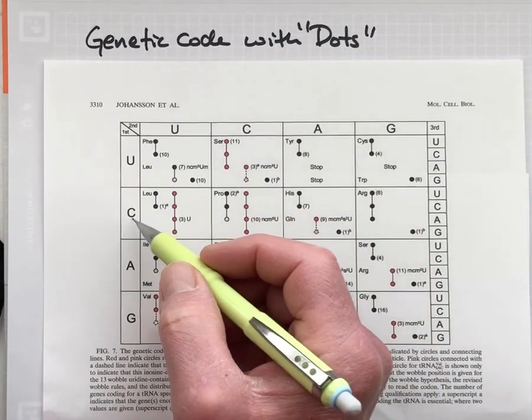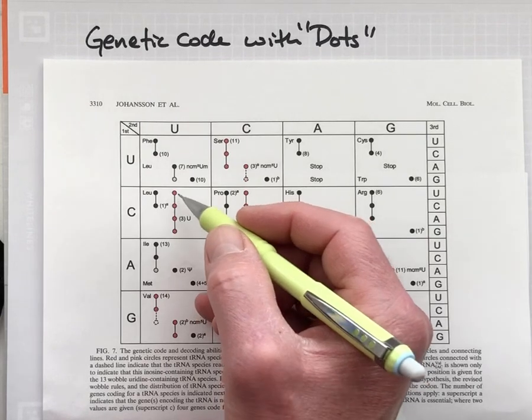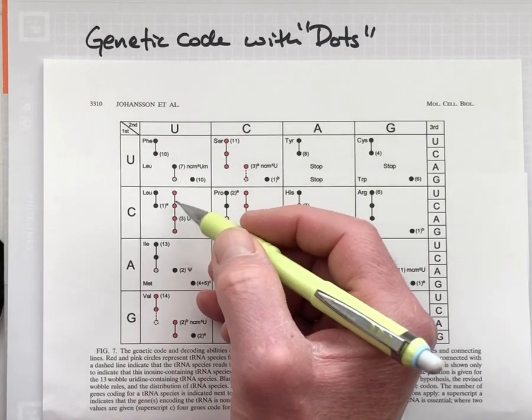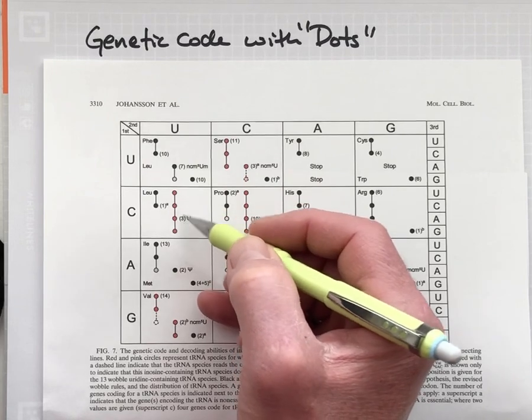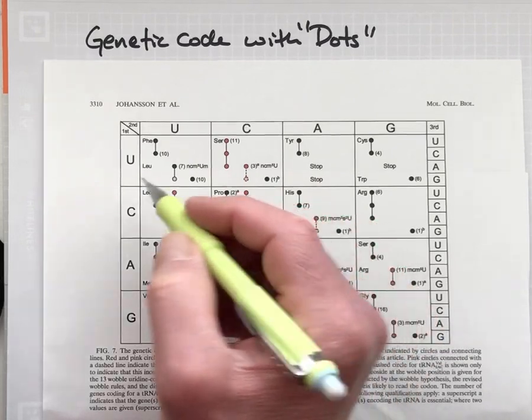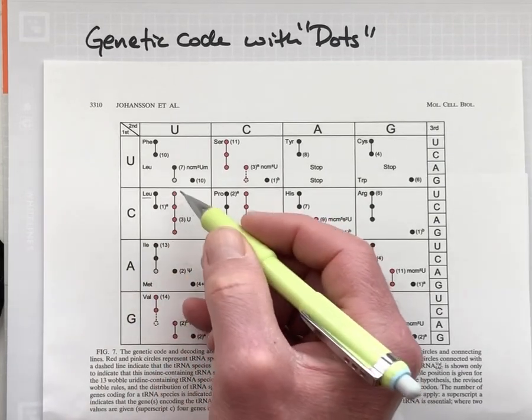So this one shown here with these red dots can interpret CU and any of the four nucleotides at the third position. So CU is interpreted by this one tRNA molecule and it's bringing leucine to the ribosome to decode that particular codon CU.